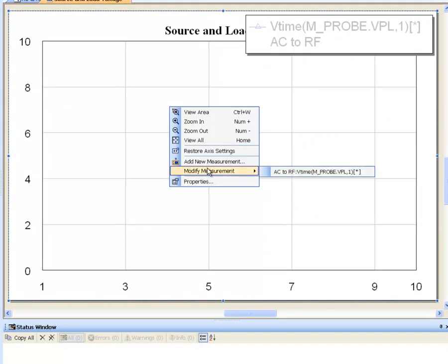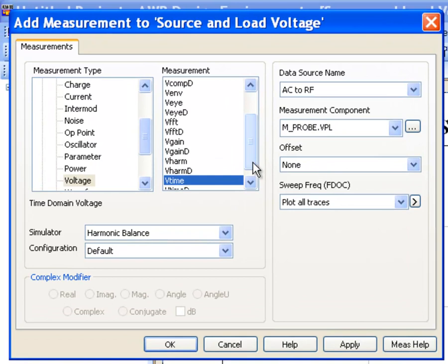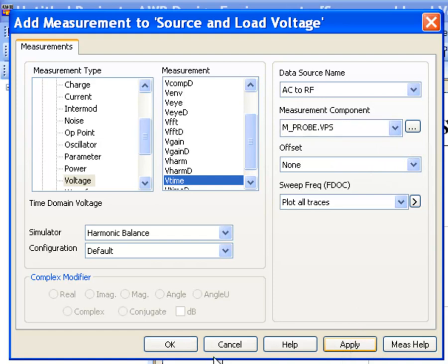And we add another measurement of course for the source voltage in a similar fashion, but we just need to change the measurement element. Apply, apply and then OK.